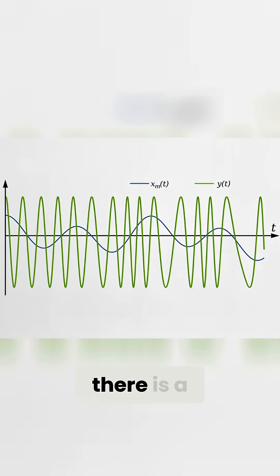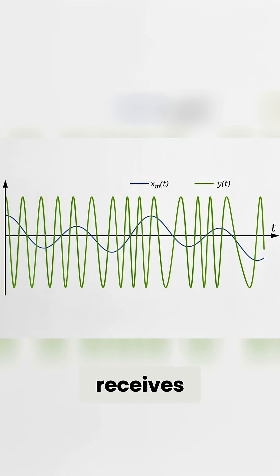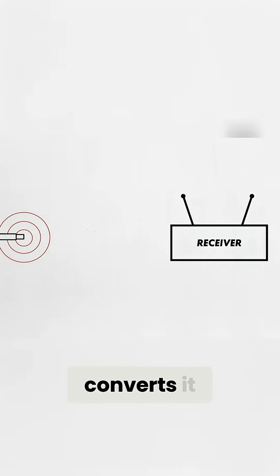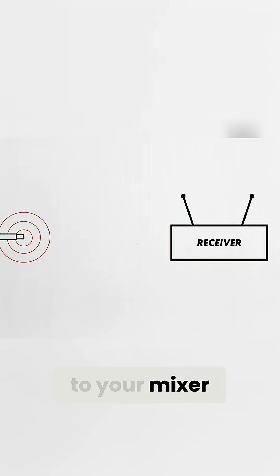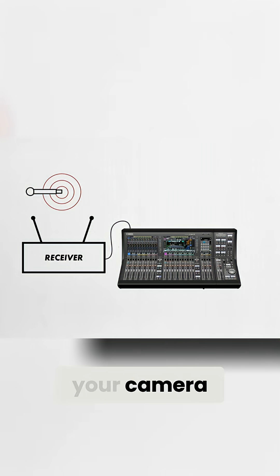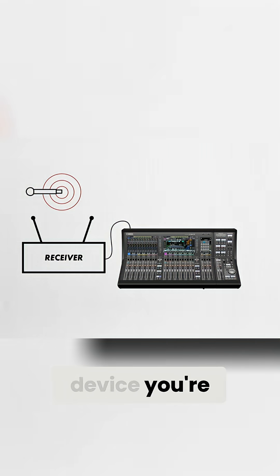On the other end, there is a receiver which receives the modulated carrier, converts it back into an audio signal, and sends it to your mixer, your camera, or whatever audio device you're using.